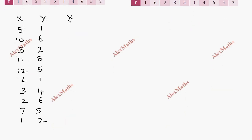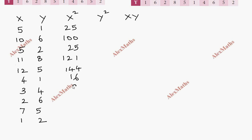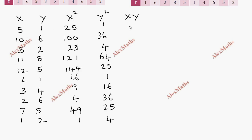The other columns needed are x square, y square, and xy. For x square: 5²=25, 10²=100, 5²=25, 11²=121, 12²=144, 4²=16, 3²=9, 2²=4, 7²=49, 1²=1. For y square: 1, 36, 4, 64, 25, 1, 16, 36, 25, 4. For x into y: 5×1=5, 10×6=60, 5×2=10, 11×8=88, 12×5=60, 4×1=4, 3×4=12, 6×2=12, 7×5=35, 1×2=2.